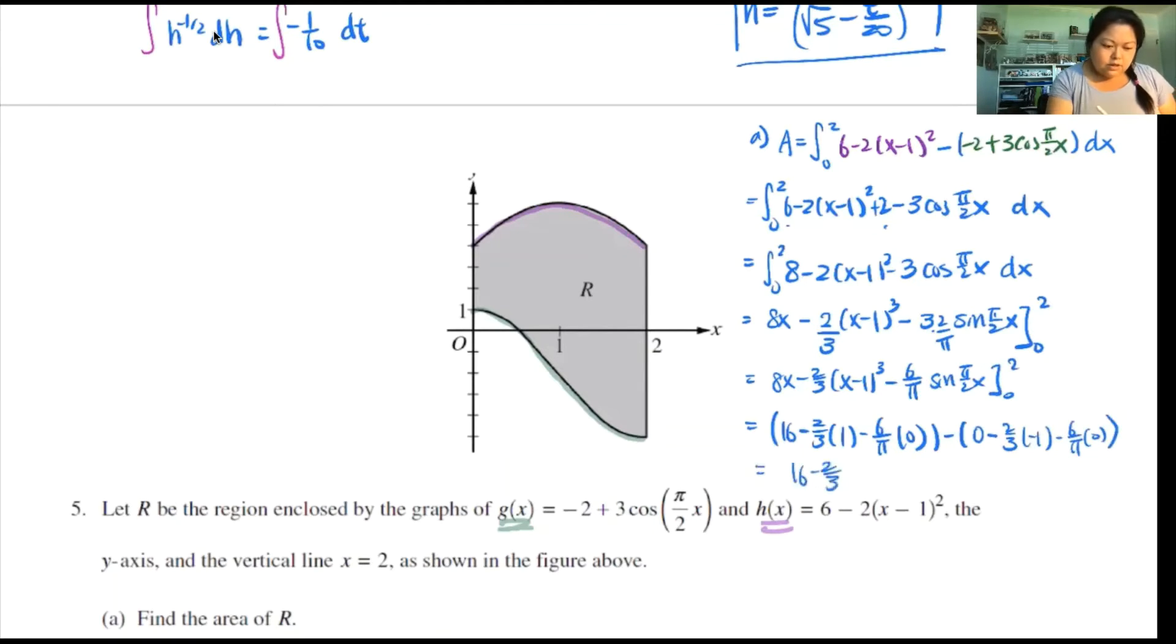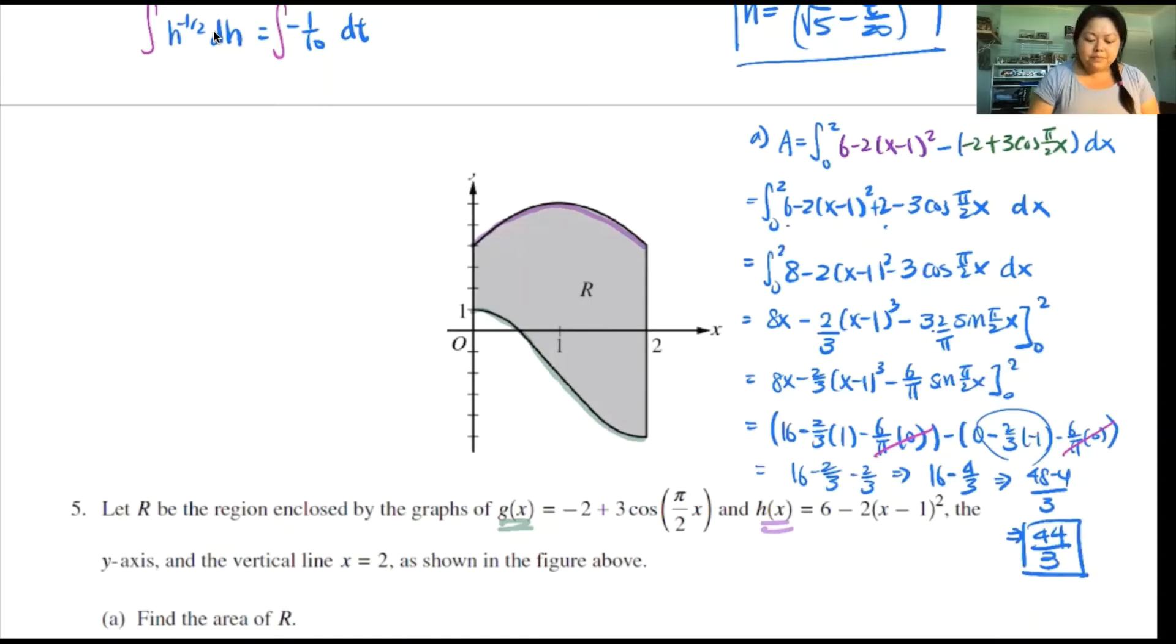Let's clean up. I get 16 minus 2 third. This is 0, that's 0. What else do I have? Minus, so this is a positive 2 third, minus 2 thirds, so minus 2 third. So I get 16 minus 4 thirds. So if I multiply this out, or at least I get 16 times 3. 16 times 3 is 48, so I get 48 minus 4 all over 3. Final answer, 44 over 3 for this area. So yes, it did look pretty bad in the beginning, but it does clean up a bit.